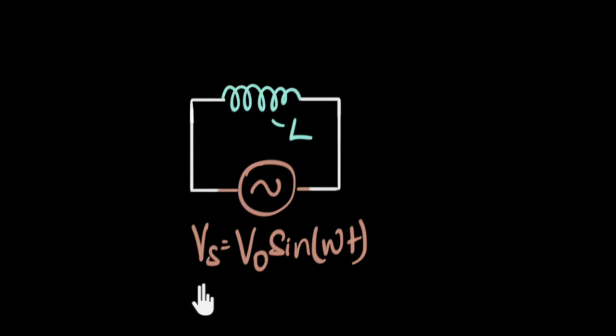In this video, we're gonna take our alternating voltage generator and attach it to a coil of wire, which is also called an inductor, and find out what will be the expression for the current.